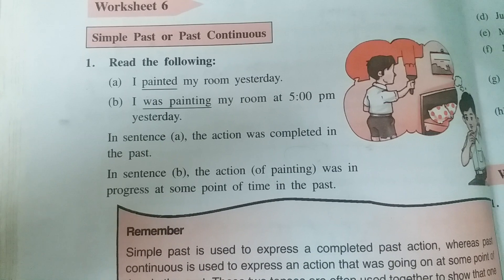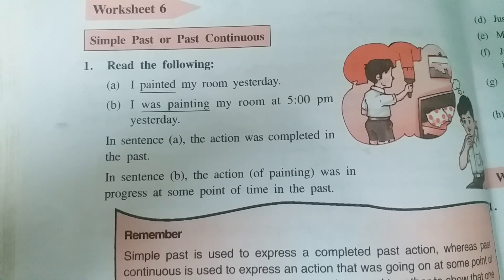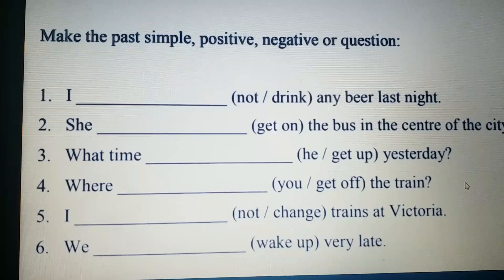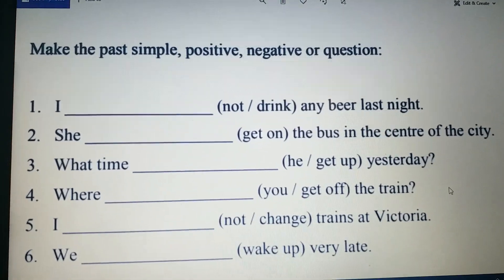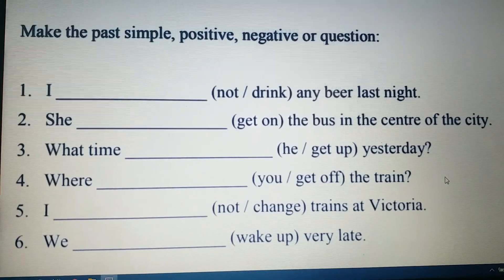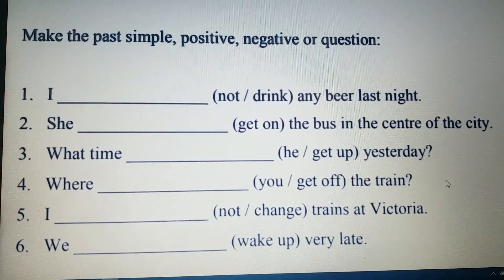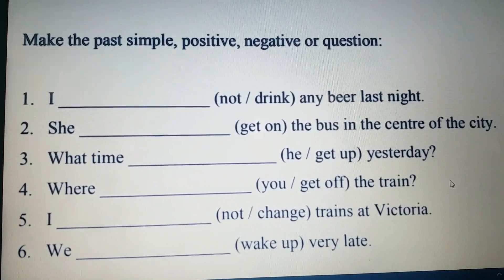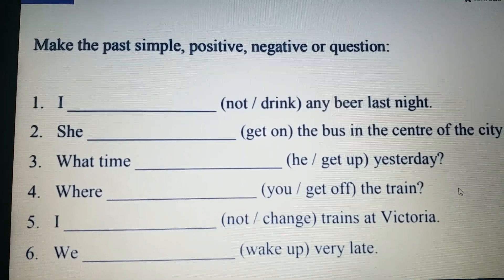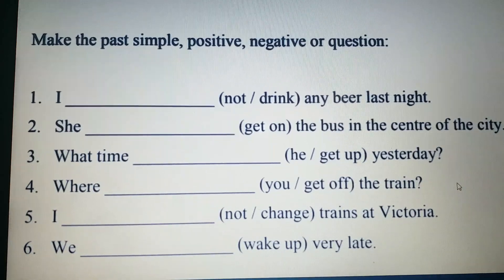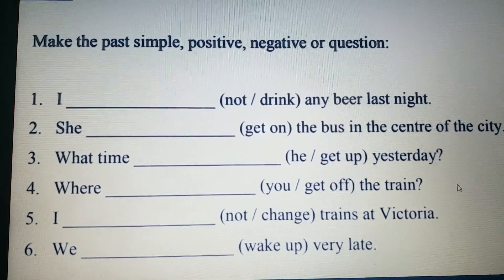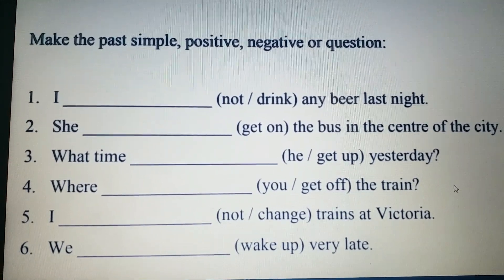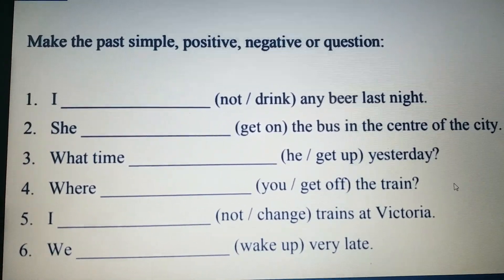How do we make use of simple past tense to make simple positive, negative, or question statements? Let's do one worksheet. The first sentence is: 'I ___ any beer last night.' Our verb here is 'drink' and 'not' is also given, which means we are supposed to make a negative statement. When we make a negative statement, we always use 'did not' plus the first form of the verb.